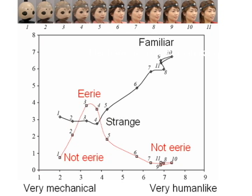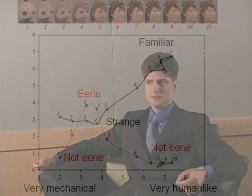However, I think there's a limitation from this sort of experiment, because we're only looking at still images. How important could still images be? They're not really an important part of our evolutionary history.